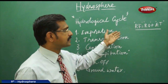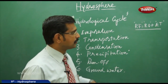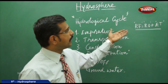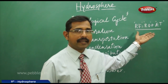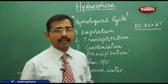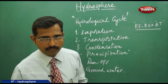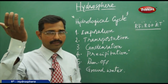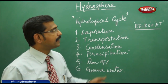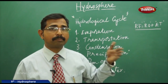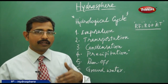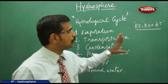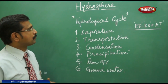In the equation RF = RO + ET: RF stands for rainfall, which is the first form of water reaching the earth's crust. RO is runoff, and ET is evapotranspiration. Evaporation is water moving from oceans or rivers into the atmosphere, while transpiration is the process by which plants and trees release water particles into the atmosphere.